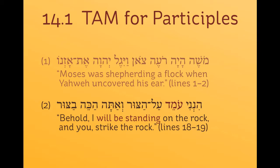Number two is a use of the participle in a future tense context. This is Yahweh speaking to Moses, giving him a list of commands, and then you get a participle statement followed by another command. The participle statement is concurrent with the command, which hasn't happened yet. Moses is to strike the rock, but he hasn't done it yet. So the point is: behold, I will be standing on the rock when you, Moses, must strike the rock.